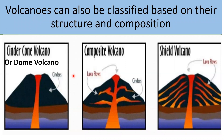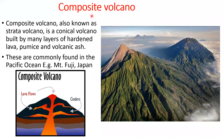Now let us see the types of volcanoes classified based on their structure and composition. A composite volcano, also known as a stratovolcano, is a conical volcano built by many hardened layers of lava, pumice and volcanic ash. The hardened layers of magma or lava are visible here. These are commonly found in the Pacific Ocean. An example is Mount Fujiyama of Japan.